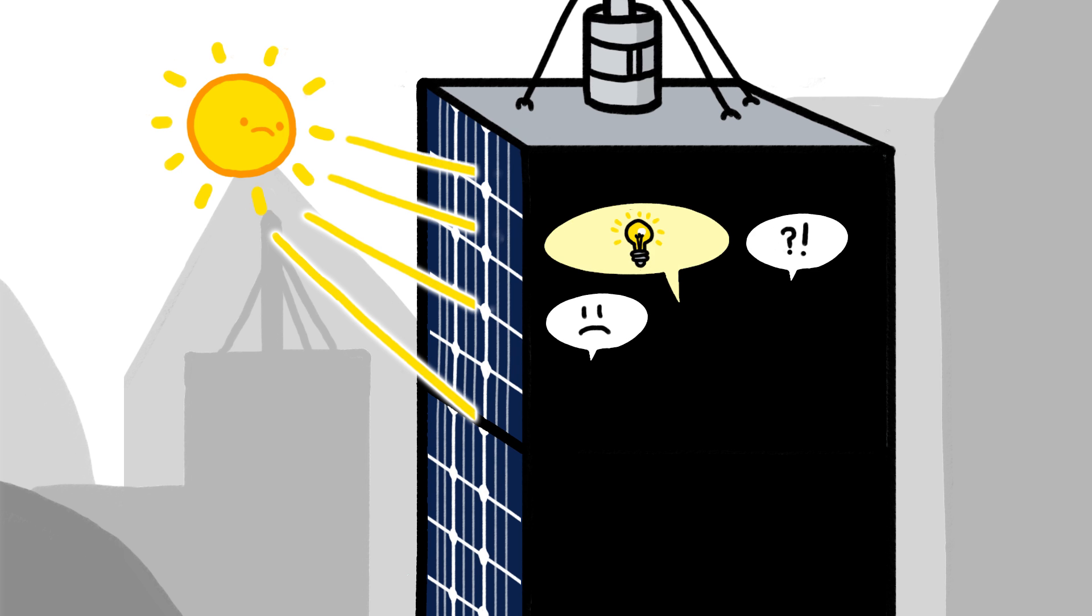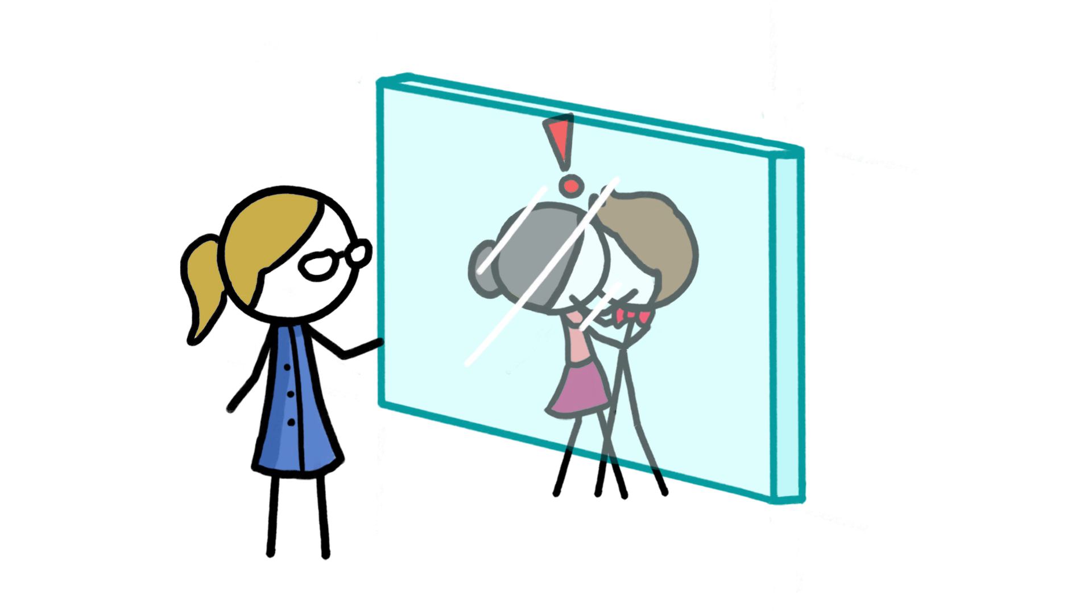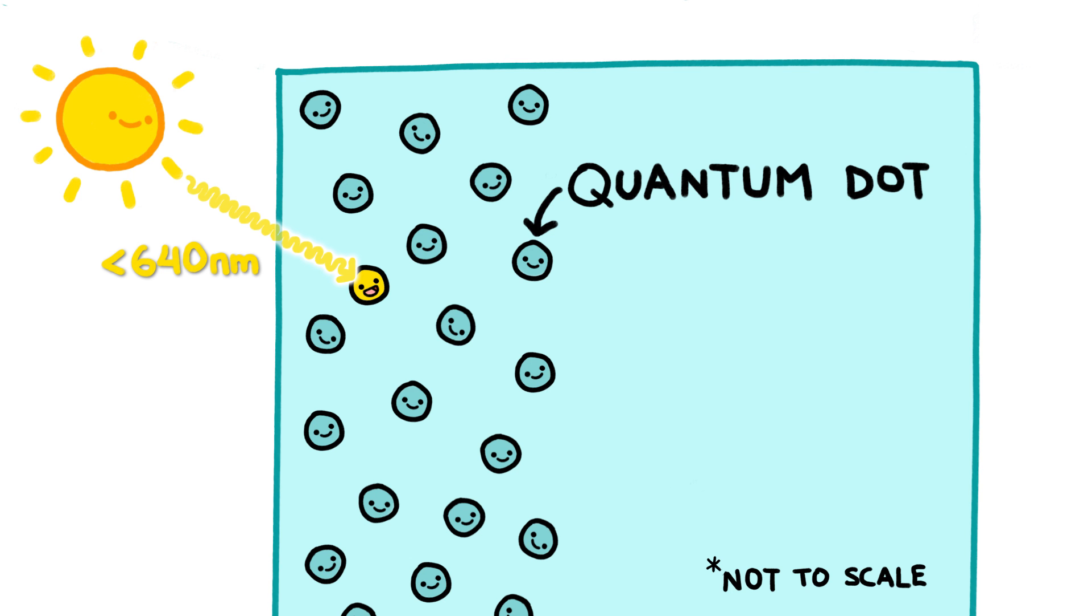However, there might be another way. Scientists recently invented a solar panel that looks like a window. In fact, it is a window, except that it's embedded with a thin layer of tiny silicon particles called quantum dots that absorb some of the shorter wavelengths of incoming light while letting the rest pass through.